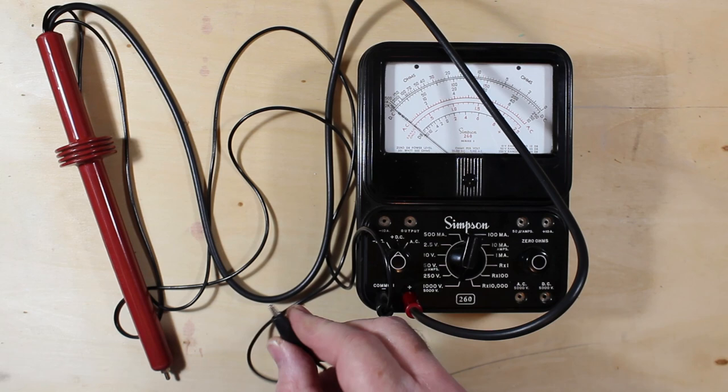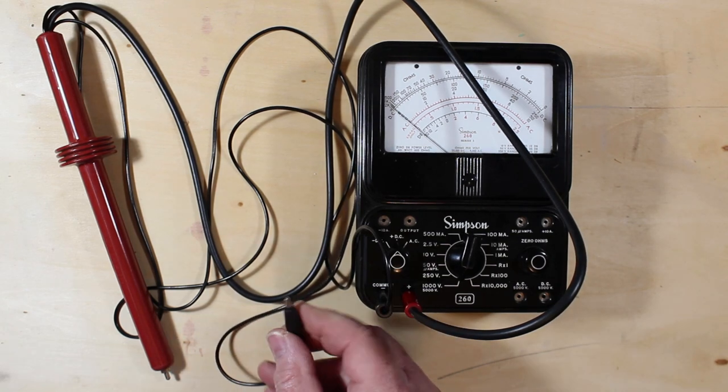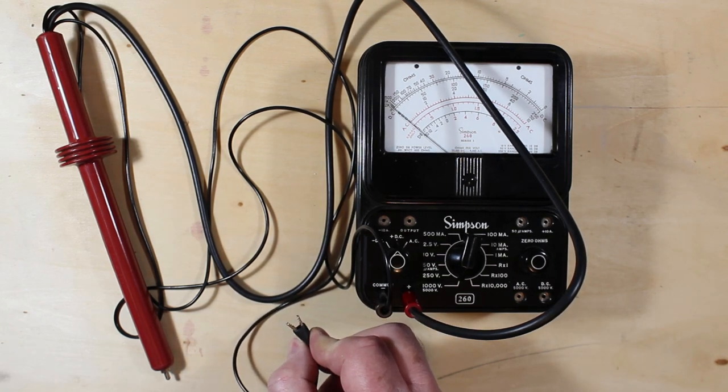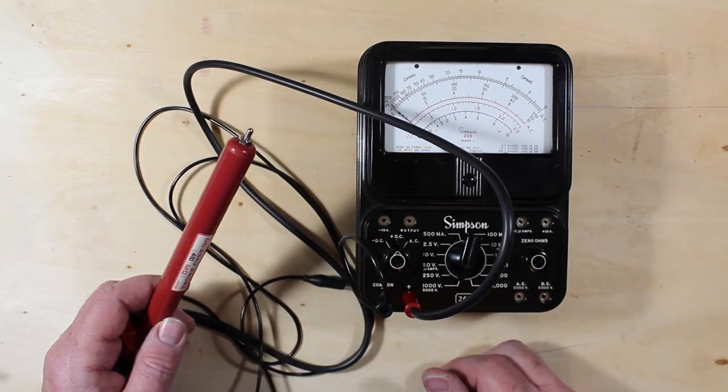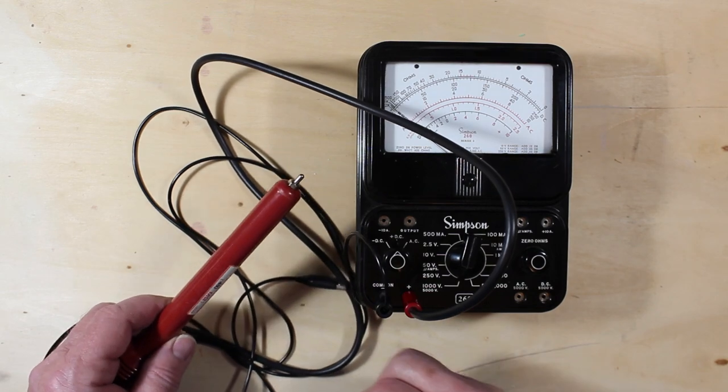The alligator clip goes to the ground or chassis or whatever it is that you're reading. And then, obviously, ever so carefully, probe whatever it is you're trying to get a high voltage reading on with the tip. Keep your hands behind that guard.